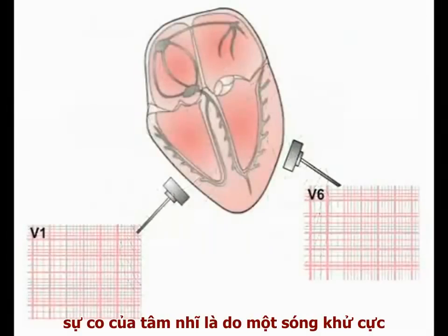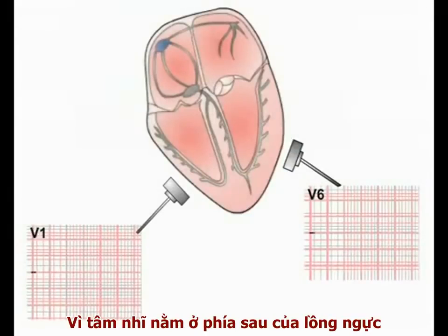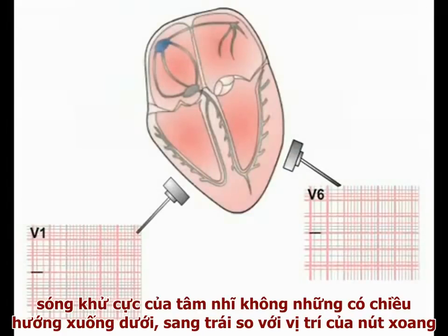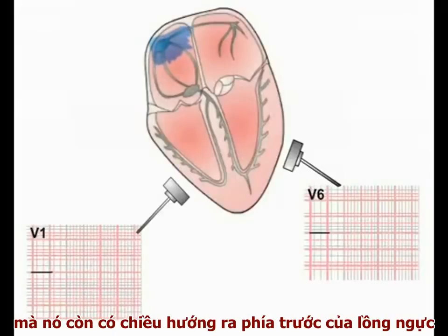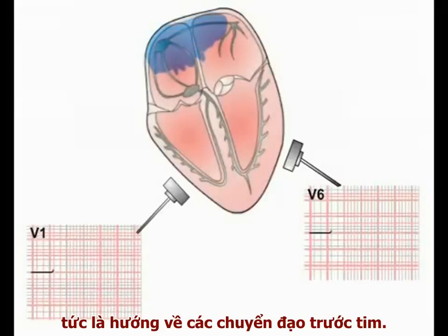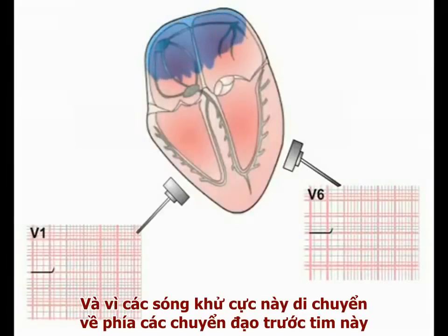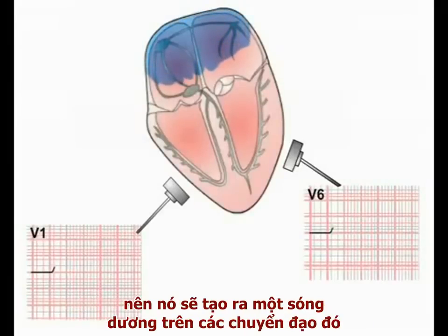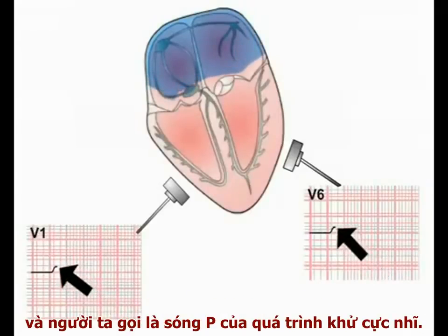During each cardiac cycle, atrial contraction is associated with a wave of depolarisation spreading over the chambers. As the atria sit at the back of the chest cavity, this wave of depolarisation spreads downwards and towards the left from the SA node, but also outwards toward the front of the chest, and therefore towards the chest leads. As this depolarising current is moving towards the leads, it produces a positive deflection on the ECG paper.